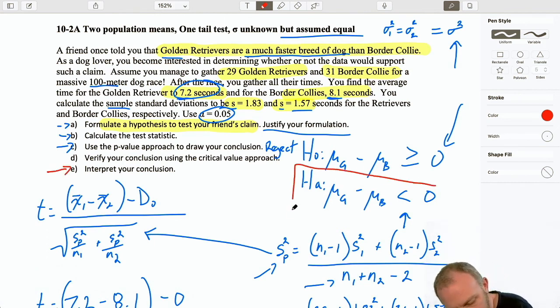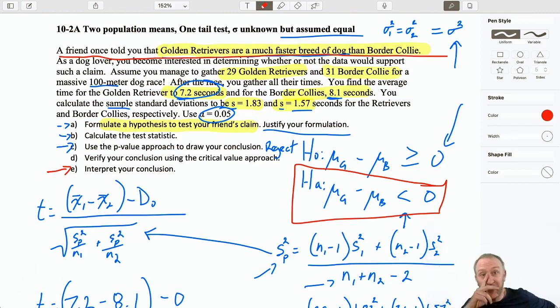What does that mean? Coming back up here, well, that means that I actually have evidence to support my friend's claim. That, on average, golden retrievers are completing that 100-meter dog race in less time than the border collies, which is consistent with saying they're faster, on average, than those border collies. Good. So, we'll do a couple more examples like this, just so you get a bit of a feel for it. And then, as always, we'll keep moving on. Hope this was helpful, guys. Thanks for watching. Bye-bye.